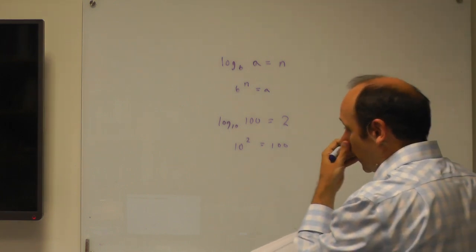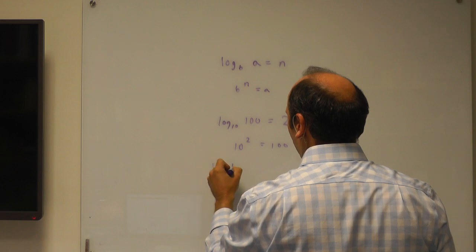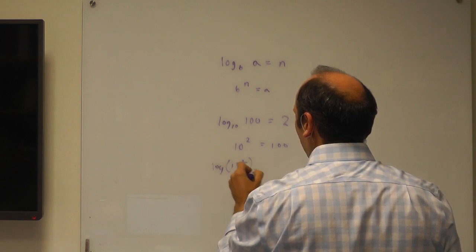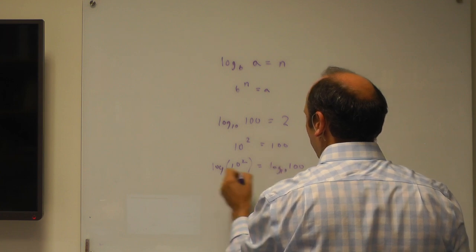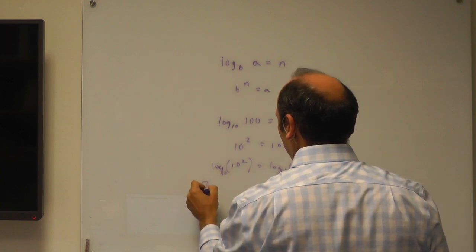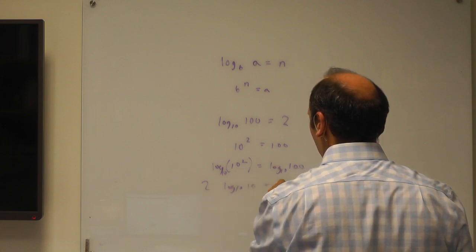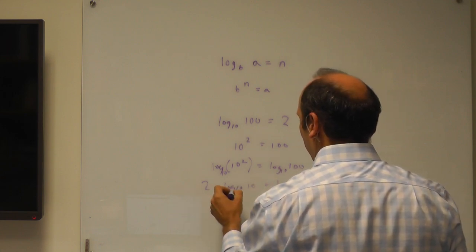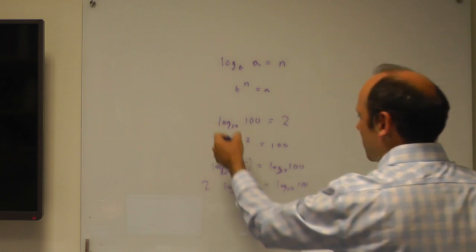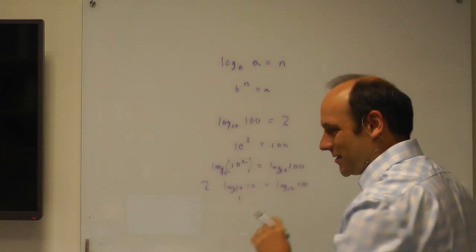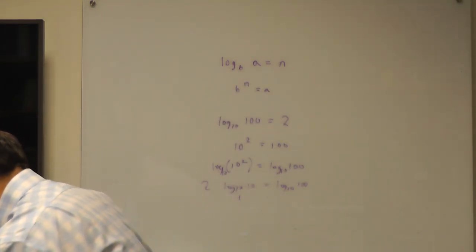For instance, if I want to take logs of this, I'd say log of 10 squared equals the log of 100, to the base 10. So that's equal to 2 log to the base 10 of 10, which equals log to the base 10 of 100. And that's just log to the base 10 of 100 equals 2, which is what we started off with. So these are all consistent. What we need to think about is what are the rules for logarithms so that we can see that these things are true.